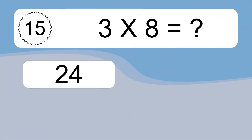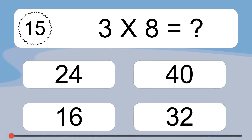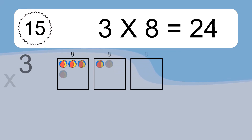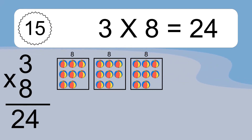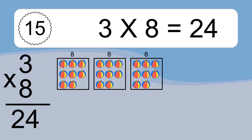3 times 8 equals what? 3 times 8 equals 24. We have 3 boxes, and each box has 8 colorful balls inside. If you count all the balls in all the boxes together, you will have 3 times 8 balls. This equals 24 balls.